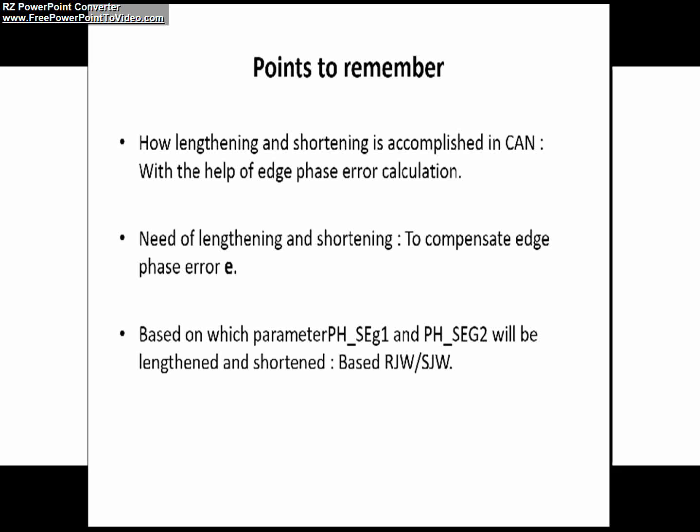As I already said in the beginning of the video, these are some points to be remembered. How lengthening and shortening is accomplished in a CAN network: with the help of edge phase error calculation. Need of lengthening and shortening: to compensate edge phase error.